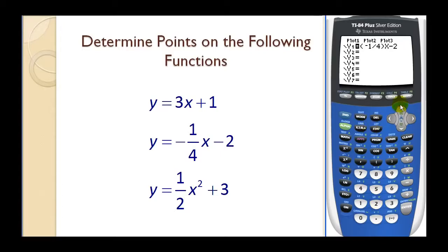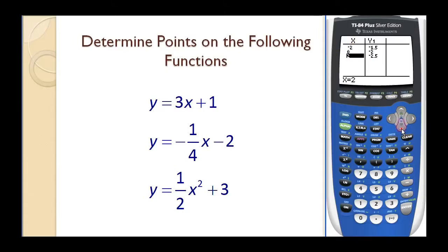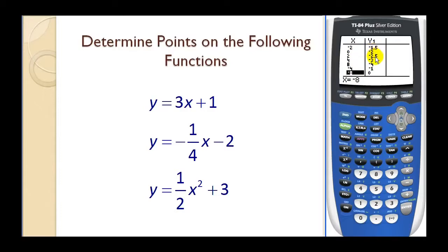If we go back to the table feature by pressing second graph, again we can type in any x value when it's in ask mode and find corresponding points. One helpful thing to note: when you have a fractional slope, if you choose x values that are multiples of the denominator, we won't get any fractions or decimals in the y values. So if we choose four, eight, negative four, and negative eight, the corresponding y values are integers. Whereas with negative two and positive two, we do get decimals.